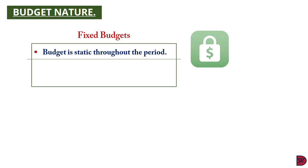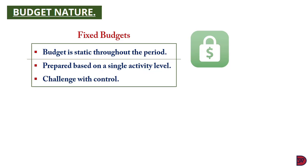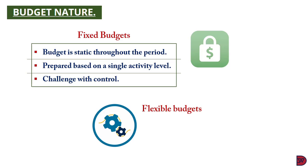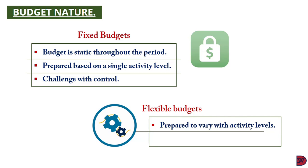Let's talk about the nature of budgets. The first is the fixed budget: once computed, it is not amended for the entire period even when there is information of a change in situations. It is prepared based on a single activity level — say, a sales unit, material, or labor. This is problematic because comparison will be done on unequal grounds: if the budget is prepared based on 20,000 activity level and the actual outcome is 30,000, the comparison is done at different activity levels, making control difficult.